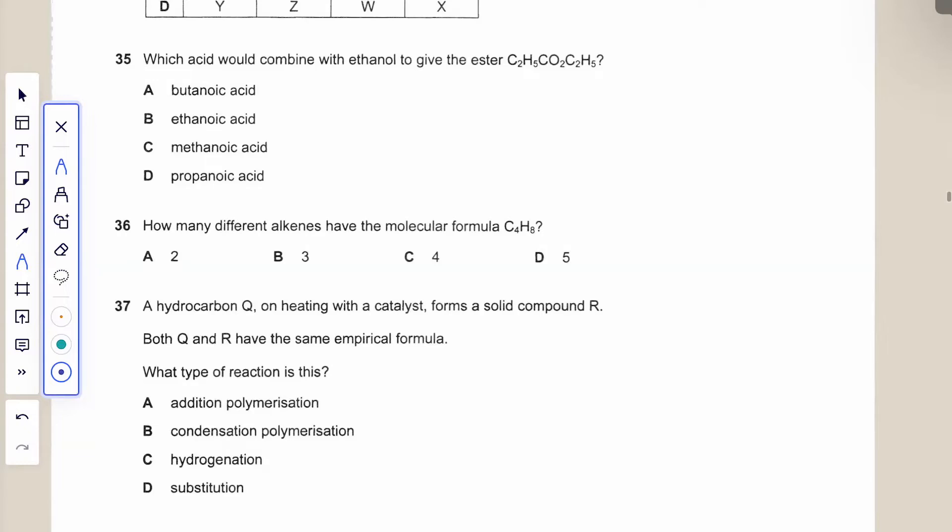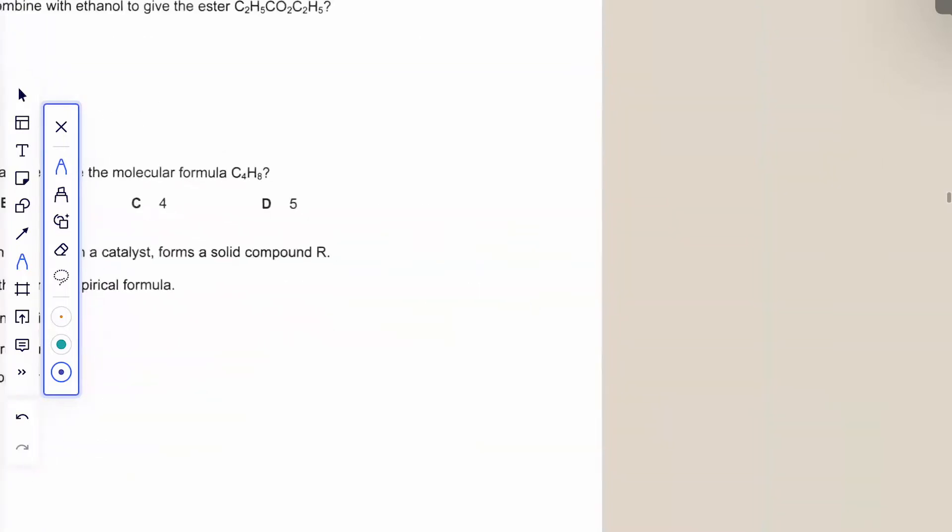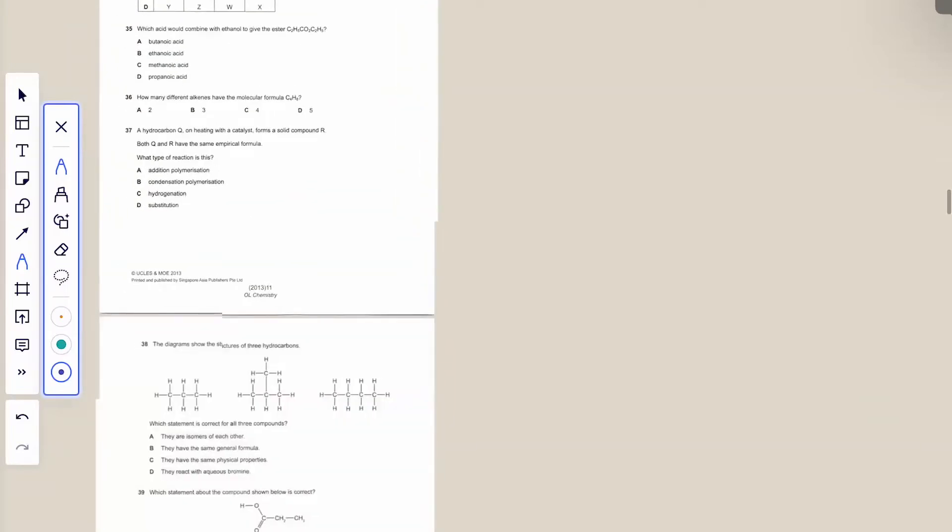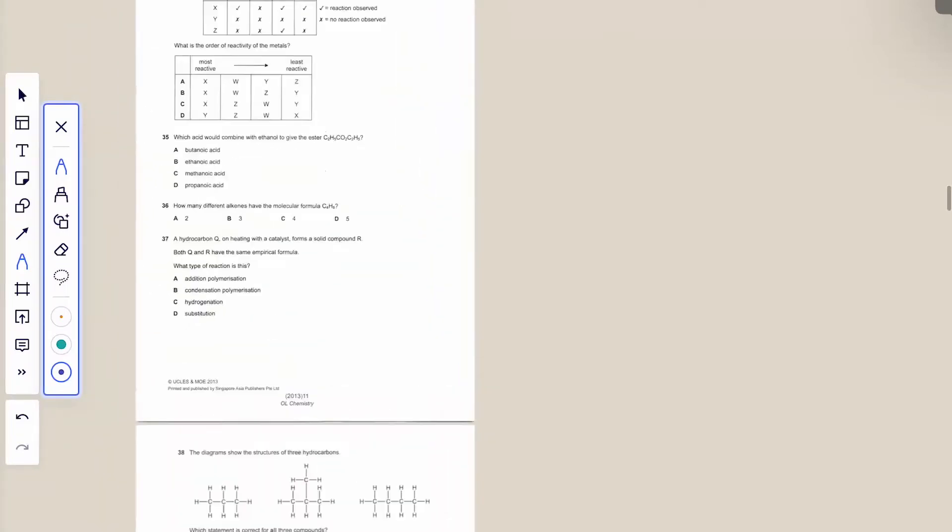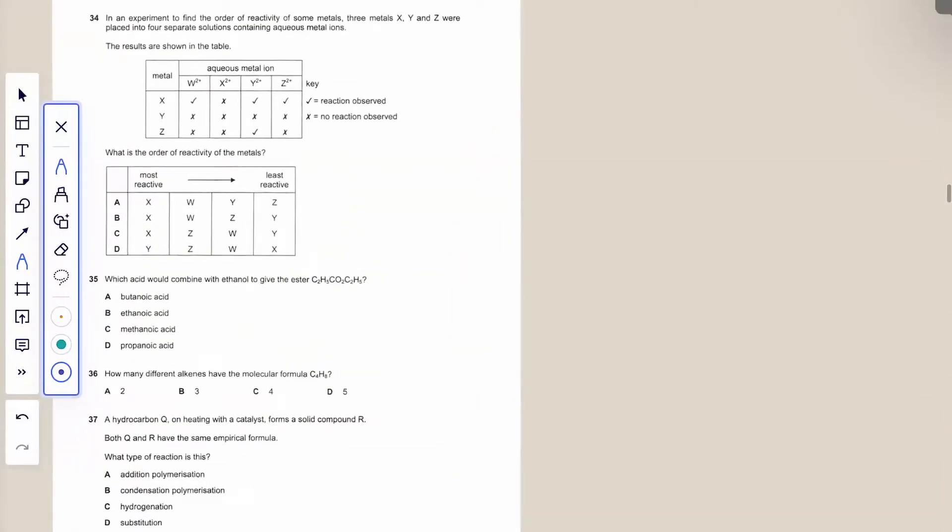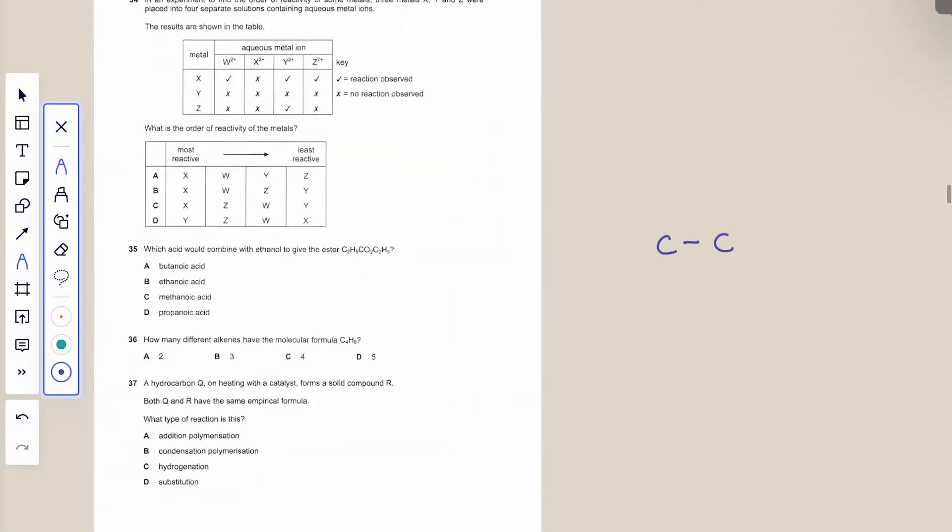Oh kings—oh sorry, sorry, alkynes, three, yeah, three. Where's the question 36? Okay, C4H8, right. That means you have alkyne, you have a double bond here, it's one possibility.